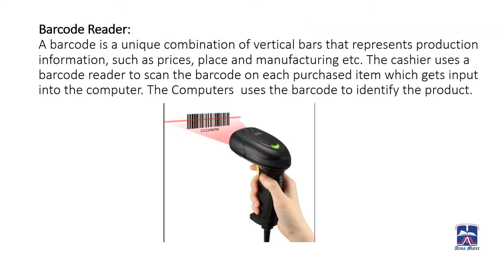First, we have the barcode reader. A barcode is a unique combination of vertical bars that represents product information such as prices, place, manufacturing, etc. The cashier uses a barcode reader to scan the barcode on each purchased item, which gets input into the computer. The computer uses the barcode to identify the product. You might have noticed a barcode on the back of any food item or crockery item you buy — the barcode reader scans that code and inputs the data into the computer.